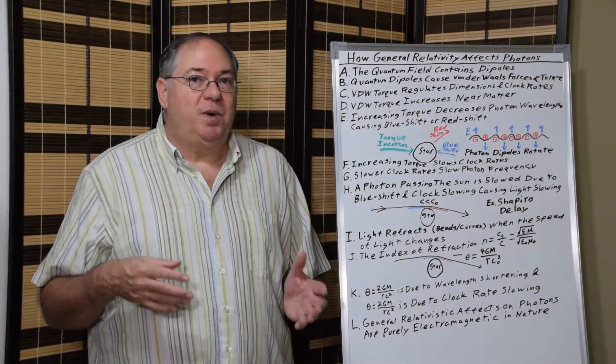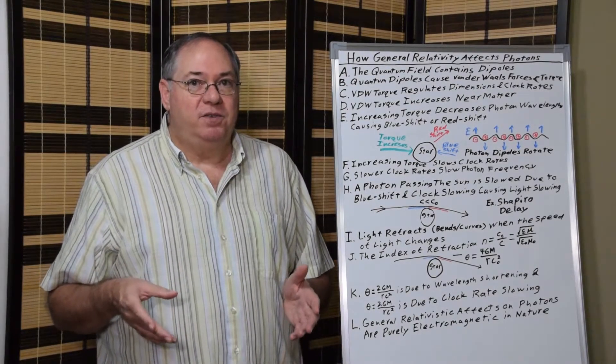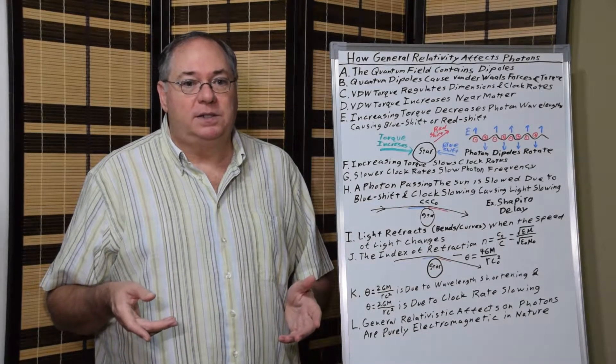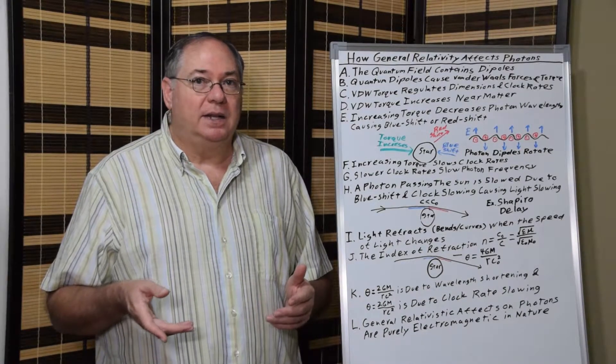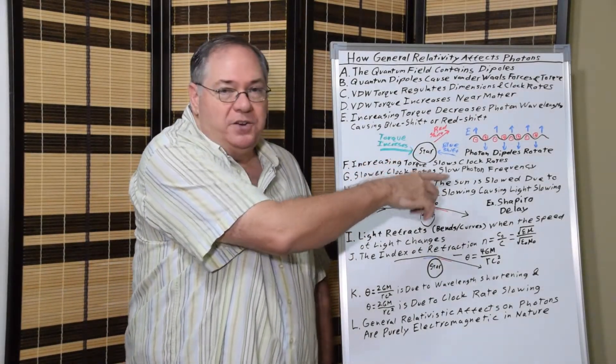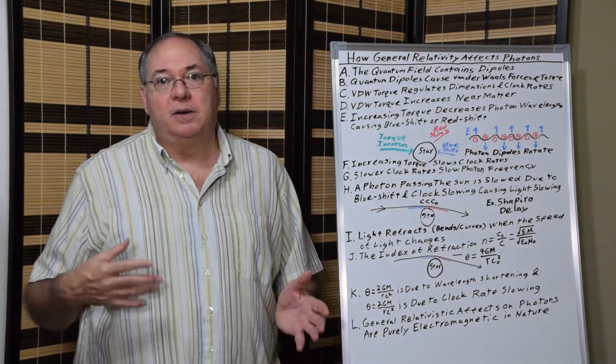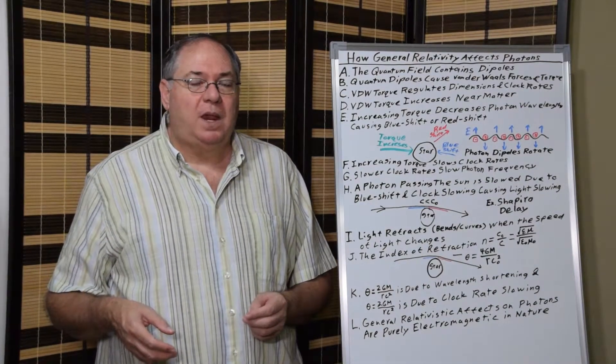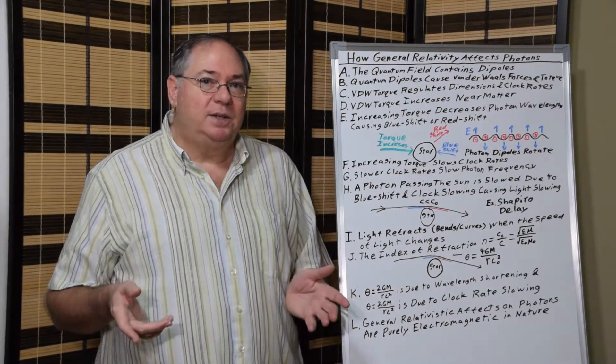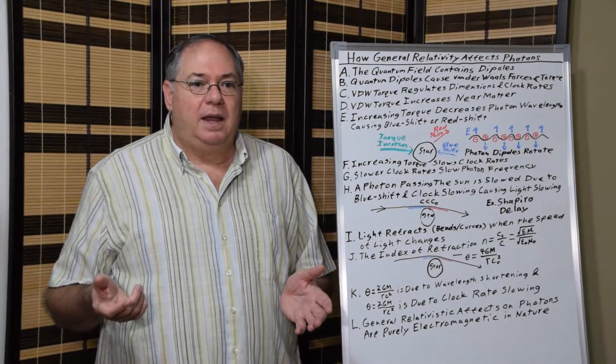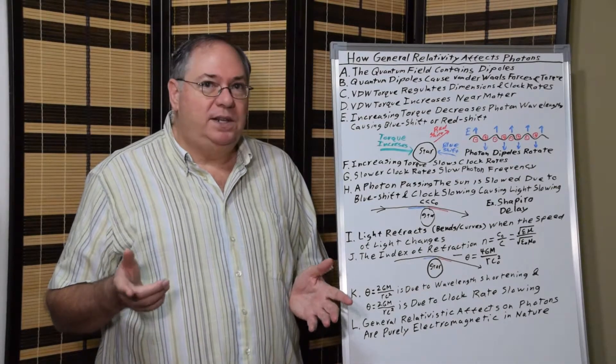If it's going away from the matter, you get redshift. This is where we get the so-called gravitational redshift, which isn't gravitational at all. It's purely electromagnetic and it's caused by the changing van der Waals torque as you get closer to a body of matter like our sun or another star. And so this mechanism is actually quite simple.